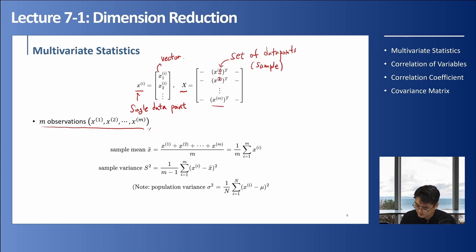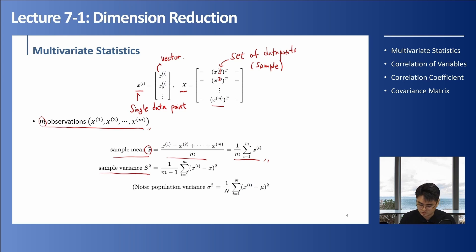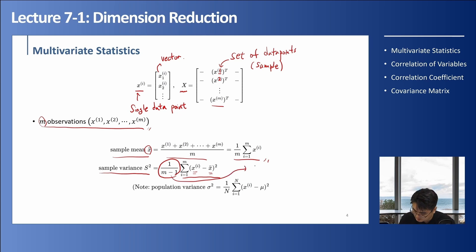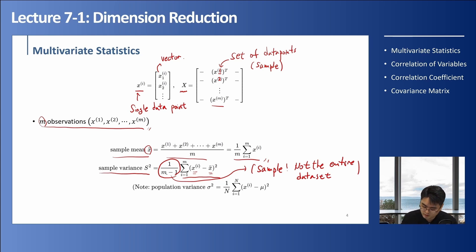When calculating the sample mean for X, we calculate the mean from the M data samples. When calculating the sample variance, we use our samples Xi and our sample mean, and we divide by M minus one. The reason we divide by M minus one — rather than M — is because this is from a sample, not the entire dataset. This is known as the Bessel correction. If we calculate the variance of the population, we divide by the entire number of elements in the population.